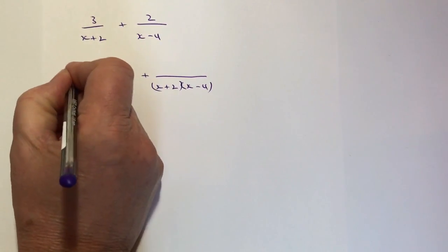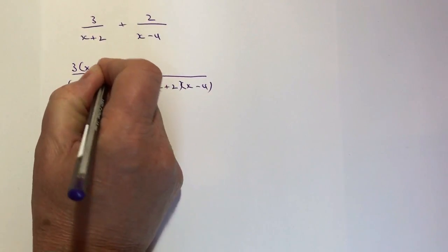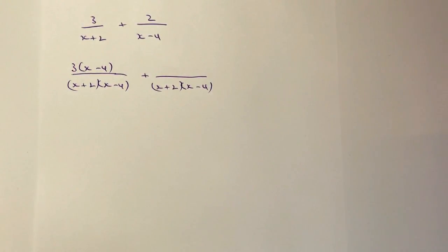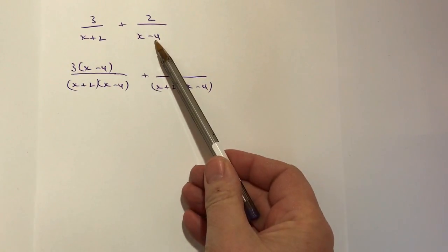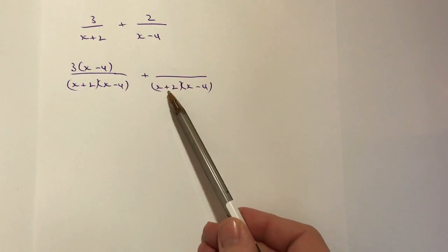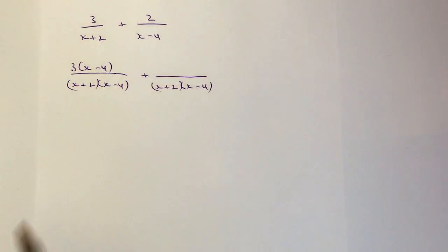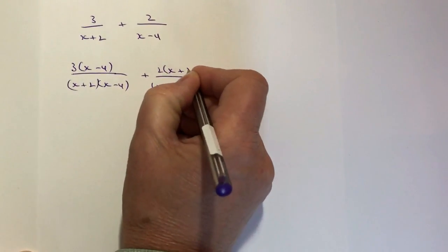Same with the other fraction. What if I multiplied this by to get to this? Well, it's actually (x+2), so I'm going to multiply the numerator also by (x+2).